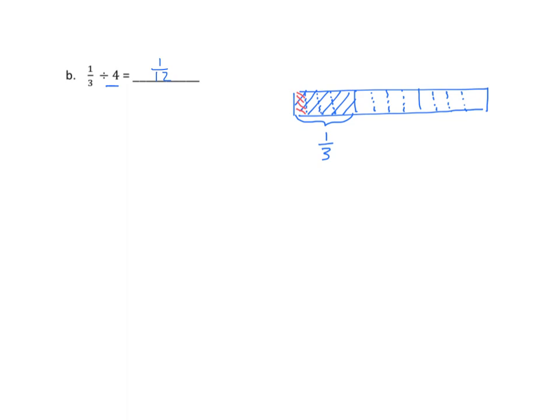Again, I'm going to look at that one-third. And since I partitioned that into four equal parts, the one-third became four-twelfths. Now, we start with four-twelfths. And that's easy to divide by four because I have four-twelfths. And if I break that down into four different parts, each part is one-twelfth.